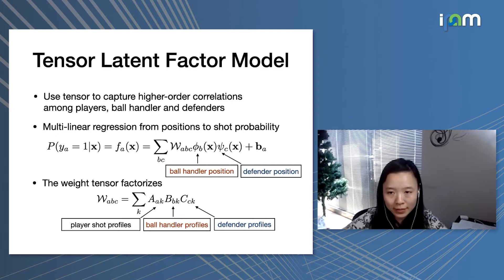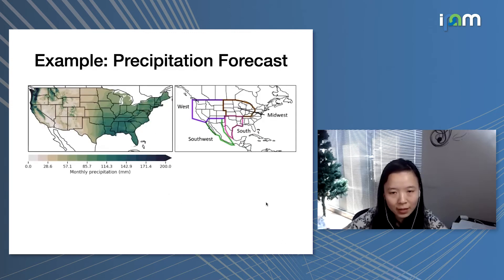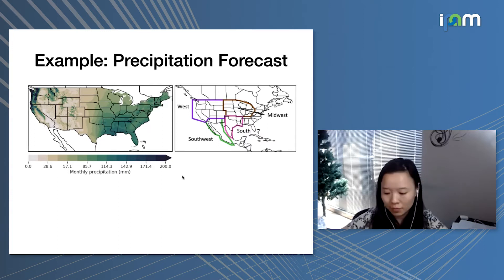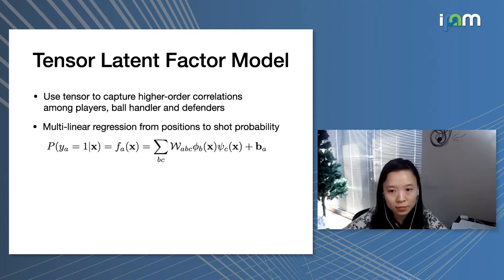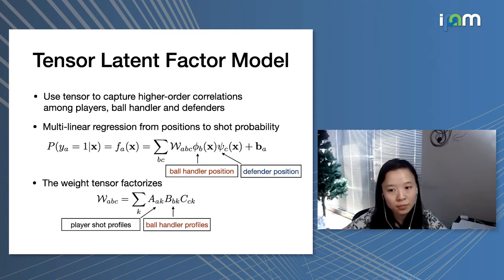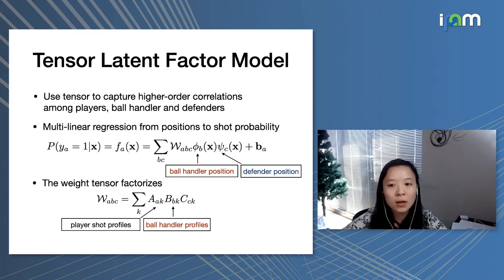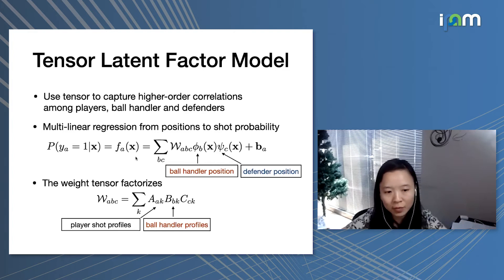Let's also talk about an example in climate forecasting. We want to understand how precipitation in the Northwest is going to change crop yield in the United States. A question from the audience: do the factors A, B, C have non-negativity constraints? The non-negativity is only on the outcome — we apply a sigmoid function to make it a probability — but A, B, C themselves are not constrained to be non-negative.